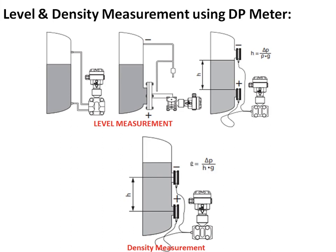When a constant head (height H) is maintained in the tank, the measured differential pressure is directly proportional to the density, given by density = delta P / (H × G). H is constant because we are maintaining a constant head in the tank, and G is constant as the acceleration due to gravity.